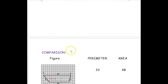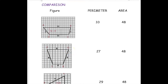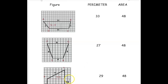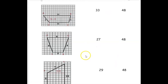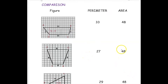Now we compare the area and perimeter of all three given figures. The first figure has perimeter 33 and area 48. The second figure has perimeter 28 and area 48. The third figure has perimeter 29 and area 48. From this comparison, the area of all three different-sized trapeziums is the same, but their perimeters are different.